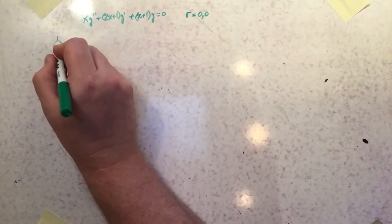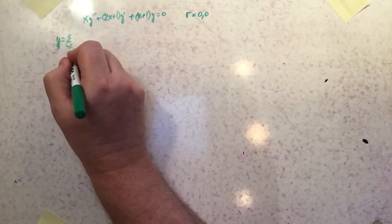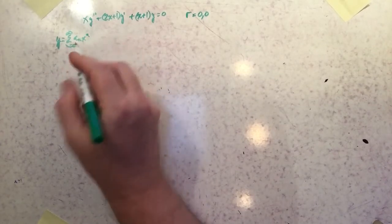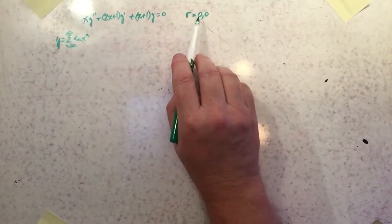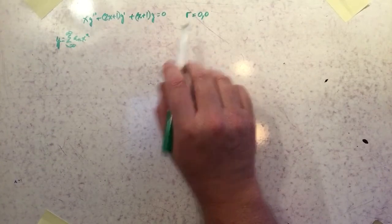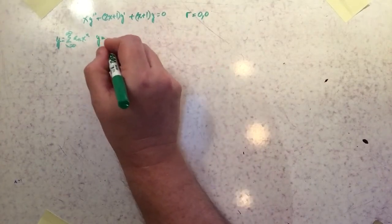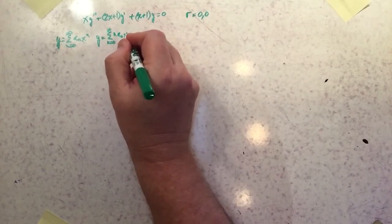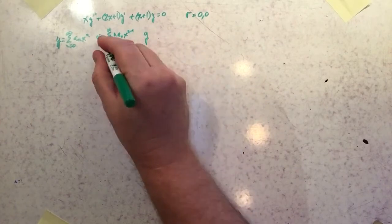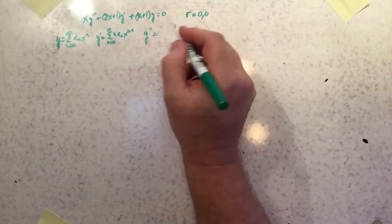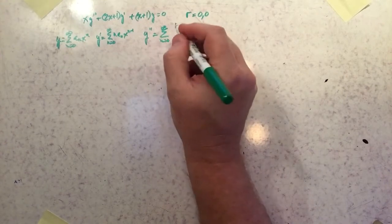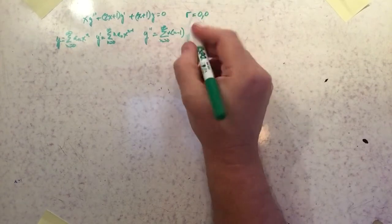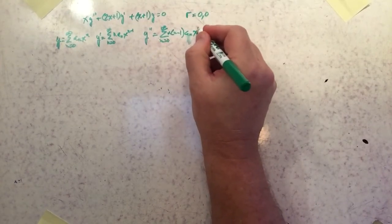The first solution is y = Σ(n=0 to ∞) aₙ xⁿ. We've multiplied by x^r, which is just one because r = 0. The first derivative is y' = Σ(n=0 to ∞) n·aₙ·x^(n−1), and the second derivative is y'' = Σ(n=0 to ∞) n(n−1)·aₙ·x^(n−2).